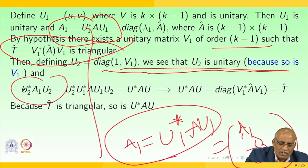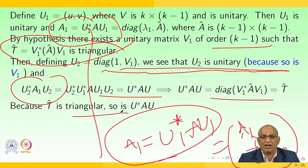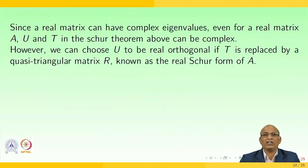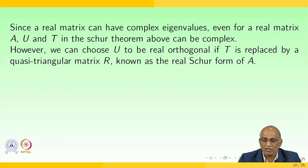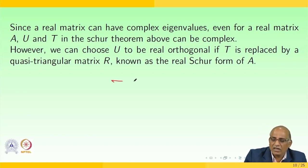This is one of the very important applications of the Schur theorem. The conclusion is: since a real matrix can have complex eigenvalues, even for a real matrix A, both U and T in the Schur theorem can be complex. However, we can choose U to be real orthogonal if T is replaced by a quasi-triangular matrix, which is known as the real Schur form.